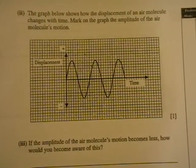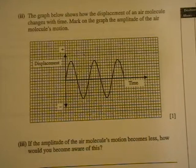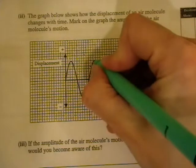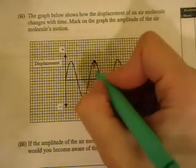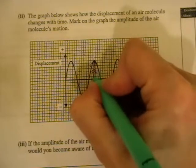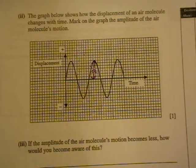The graph below shows the displacement of an air molecule, how it changes with time. And this is how as the wave passes by. Mark on the graph the amplitude of the air molecules wave motion. So we'll just put it in here. And it's always from the rest position to the peak of a crest or the bottom of a trough. And I've marked it with an A. So the amplitude of the air motion.